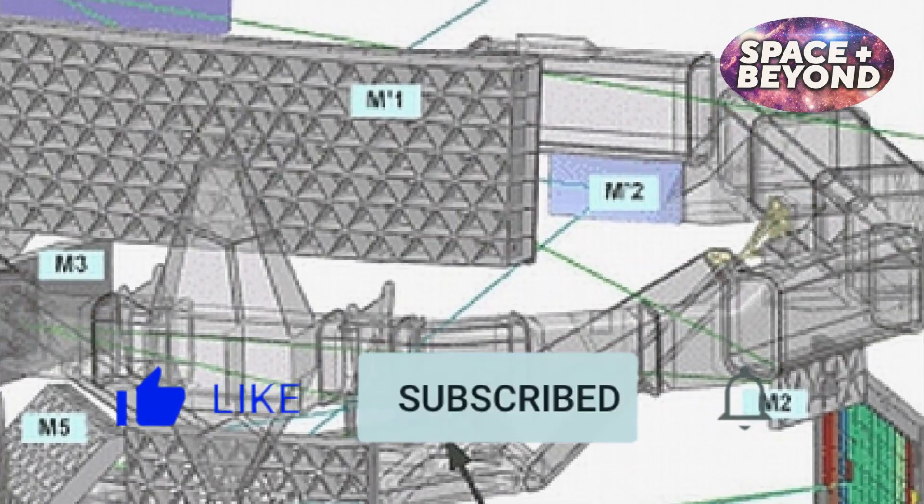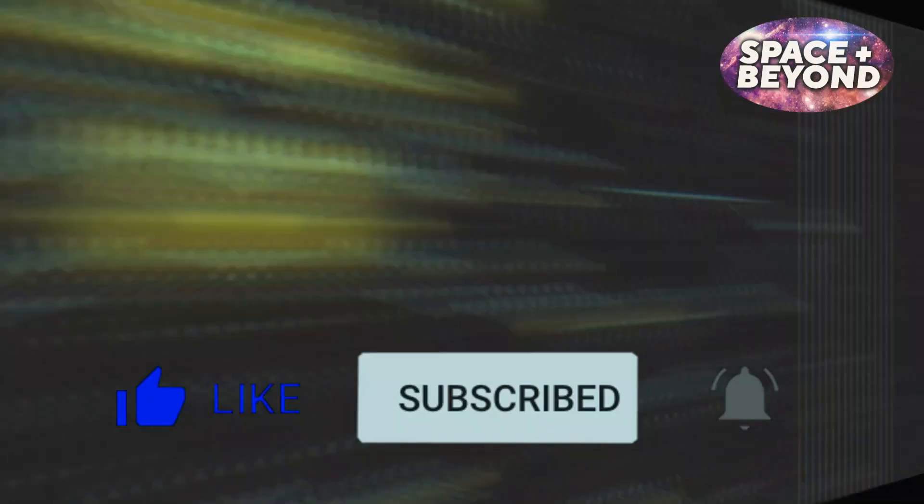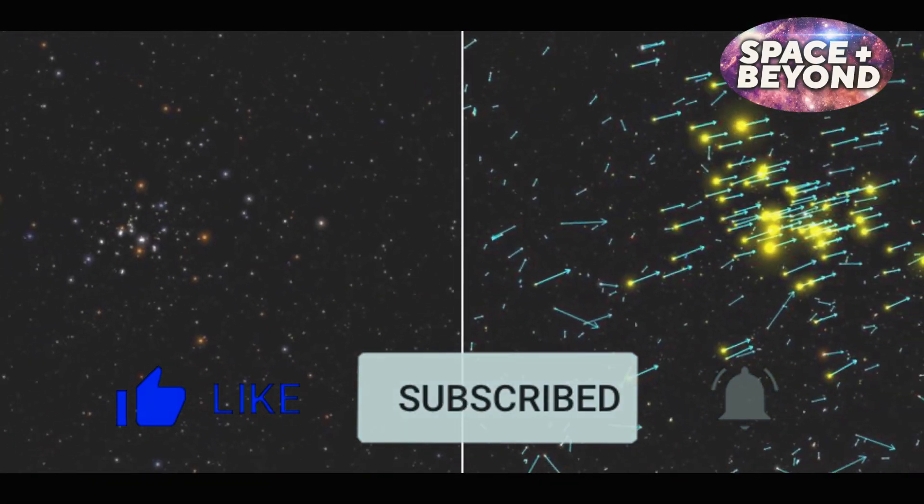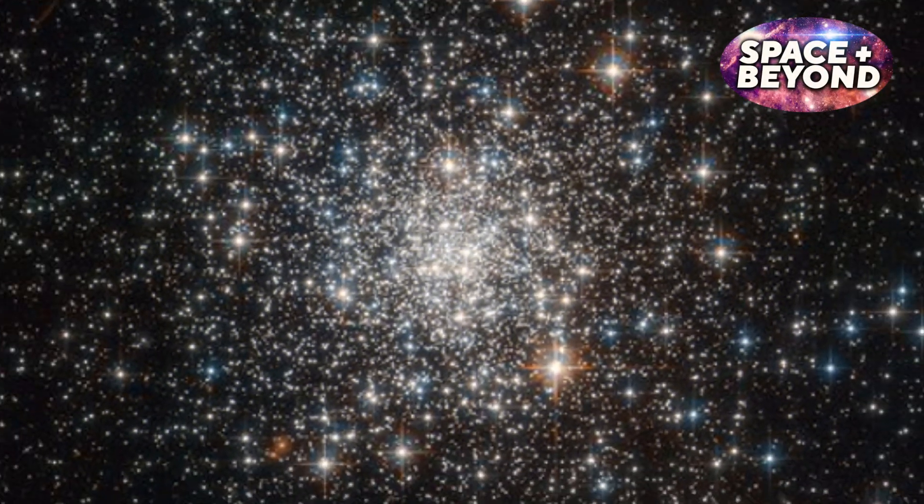With its advanced camera system, Gaia can observe more than one billion stars, about 1% of the estimated total number of stars in the Milky Way.